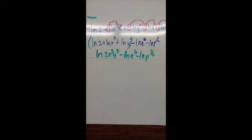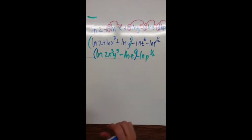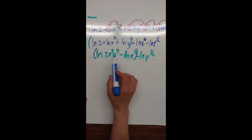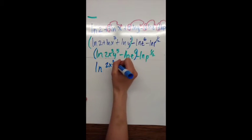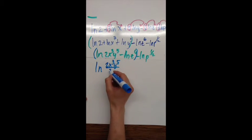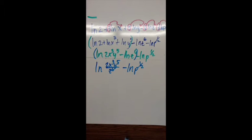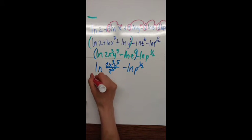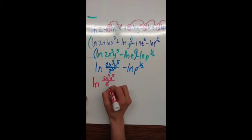Because these terms are being subtracted, I'm going to divide. So I get natural log of 2x cubed y to the 5th over z to the 6th. But I still have minus natural log of p to the one half, so I divide again — giving natural log of 2x cubed y to the 5th over z to the 6th, all over p to the one half.